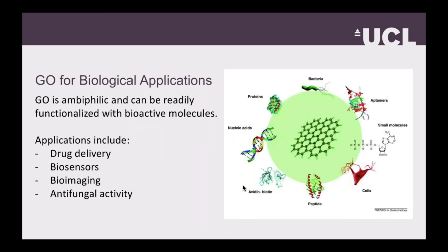Graphene oxide is also important for biological applications. The structure of graphene oxide will really depend on how soluble it is. If it has graphitic domains, it will have hydrophobic regions and hydrophilic regions. This can be really important for things like protein binding and drug targeting.